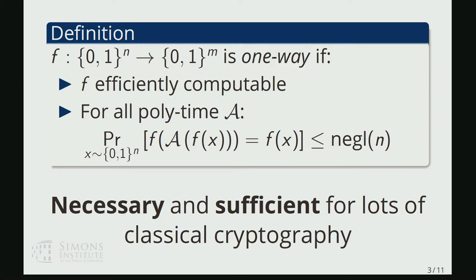But conversely, one-way functions actually also turn out to suffice for a lot of interesting cryptography, including things like pseudorandom generators, pseudorandom functions, digital signatures and commitment schemes, to give a few examples.